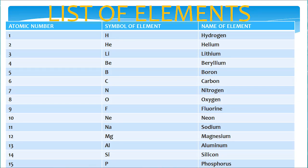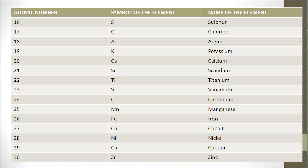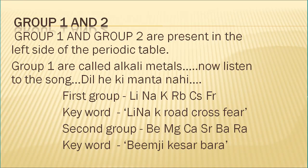Group 1 elements are called alkali metals. Group 2 elements are called alkaline earth metals. Now let's learn the group elements. For Group 1, the alkali metals, the keyword is 'Leenake road cross fear.' Using this keyword, listen to this Hindi song: 'Dilhe kimata nahi, leenake road cross fear.' Like lithium, sodium, potassium — you can expand these symbols of elements by correlating with the presentation.